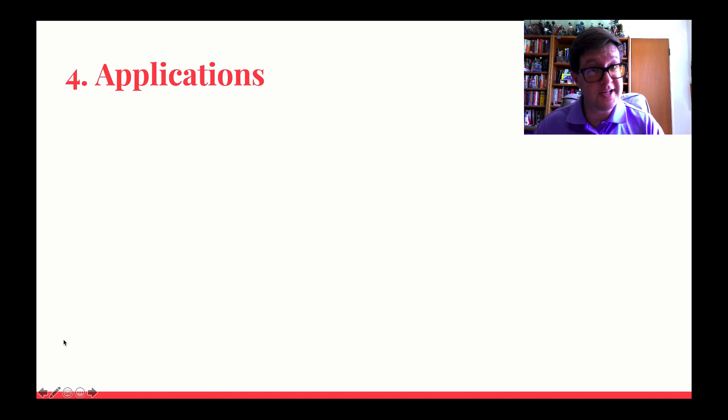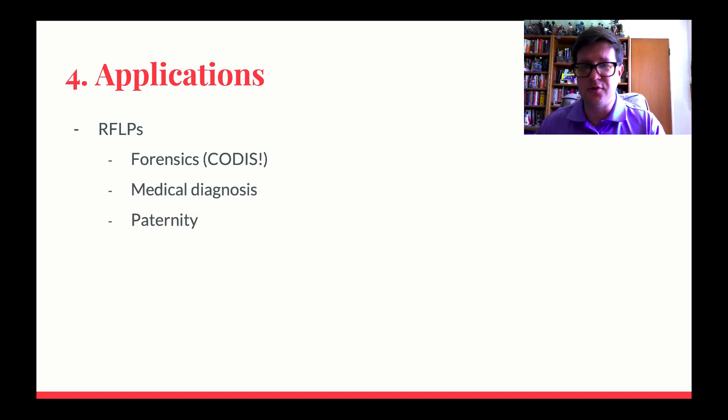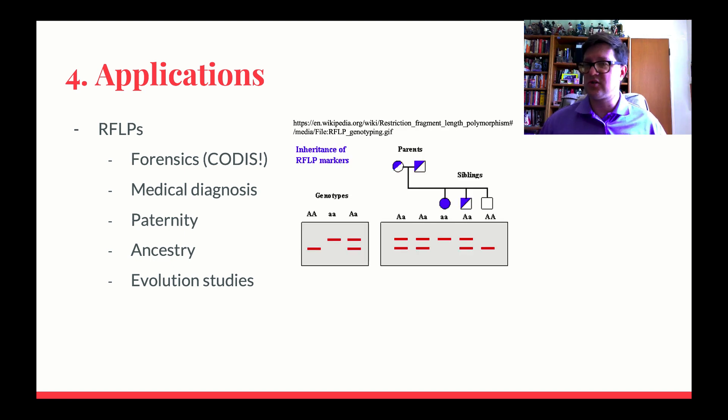So as pointed out, there's lots of applications for this. So we can use RFLPs in forensics such as CODIS from last week. We can use it in medical diagnosis. It could be useful to figure out who's the father in paternity tests, but also in ancestry. We also use it in terms of evolutionary studies. This is one of the things you can use in evolution in order to build phylogenetic trees. And all sorts of other things. There's lots of applications of this. But that's not the only thing.